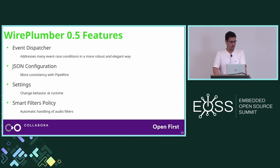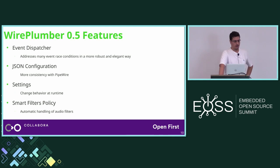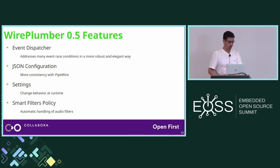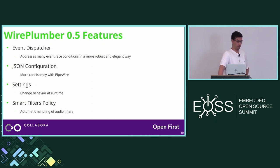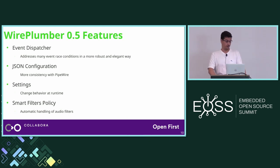Some of the new features include the event dispatcher, which is the most important one — it addresses many race conditions in a more robust and elegant way. I did a talk about this at the GStreamer conference last year if you want to know more. Also, the configuration in WirePlumber compared to 0.4 has been moved from Lua to JSON. Version 0.5 still has Lua but only for implementing functionality, while configuration is now in JSON, to keep consistency with PipeWire which also has a JSON configuration.